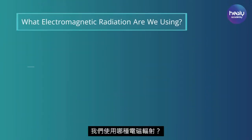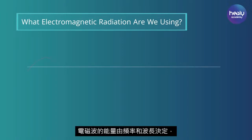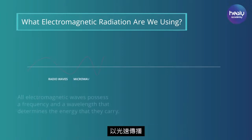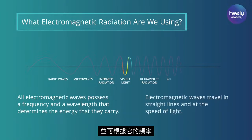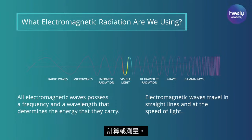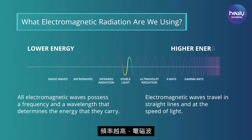The electromagnetic radiation we use has energy determined by frequency and wavelength. It propagates at the speed of light and can be calculated or measured, among others, on the basis of its frequency and the strength of its magnetic field. The higher the frequency, the more energy the electromagnetic wave is carrying.